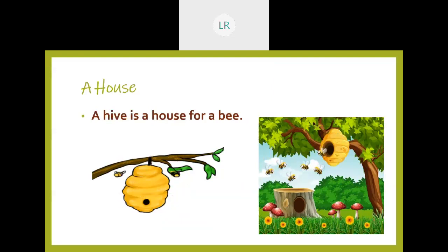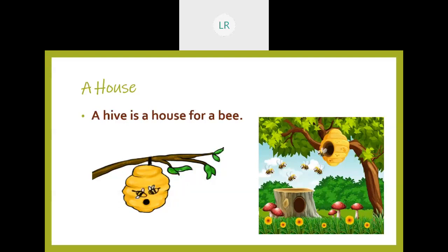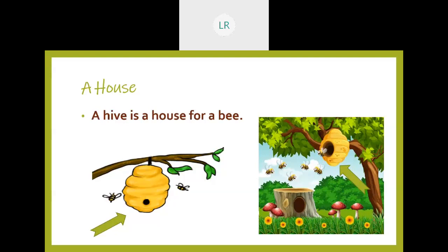And what do you see in this picture? You are seeing a beehive. Which is the house for the bee? A hive is a house for a bee. Have you heard the sound? What sound did you hear, children? You heard the sound of a bee. Where is the hive here? Here is a hive. So a hive is a house for a bee.